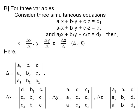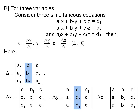Here Δ is the determinant with rows (a1, b1, c1), (a2, b2, c2), (a3, b3, c3) — that is, the determinant of the coefficients of x, y, and z in their order. Δx is obtained from Δ by replacing the coefficients of x in the first column by the corresponding constants d1, d2, d3. Δy is obtained from Δ by replacing the coefficients of y in the second column by the corresponding d's. Δz is obtained from Δ by replacing the coefficients of z in the third column by the corresponding d's.